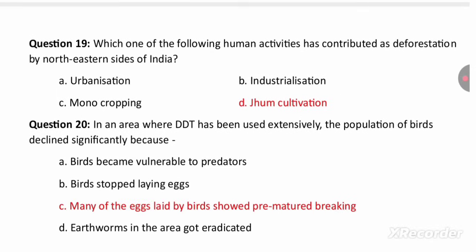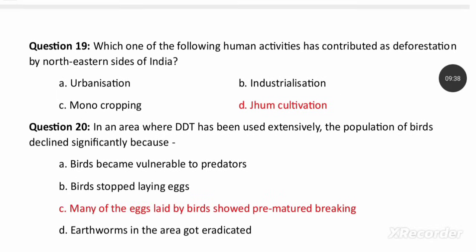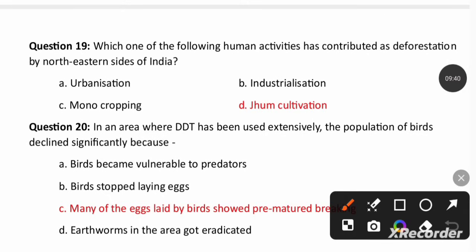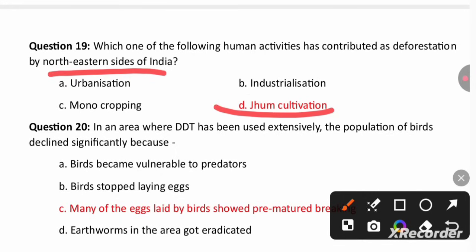Which human activity contributed to deforestation in the northeastern sites of India? It is Jhumb cultivation, where a part of the forest is totally utilized for crop cultivation. That is why Jhumb cultivation is responsible for deforestation in the northeastern side of India.